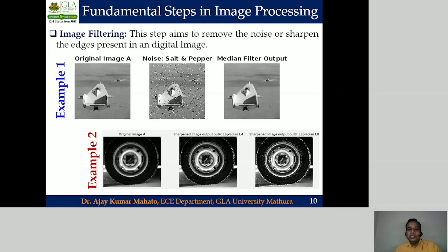Image filtering aims to remove noise or sharpen the edges present in the digital input image. In example one, related to noise removal, a input image is read in MATLAB and salt and pepper noise is added to make it noisy. A median filter is then applied to this noisy image, resulting in an output image free from salt and pepper noise. Example two is related to sharpening of edges, which is performed to enhance blur edges in the digital input image.